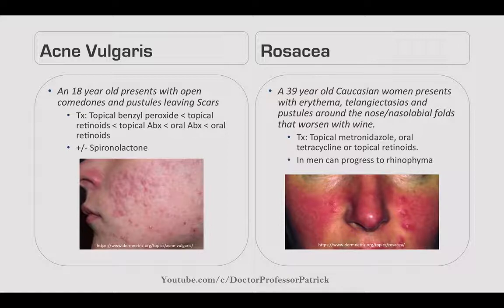Rosacea: a 39-year-old Caucasian woman presents with erythema, telangiectasias, and pustules around the nose and nasolabial folds, worsened by wine intake. Treat with topical metronidazole, oral tetracycline, and topical retinoids. In men, this can progress to rhinophyma, an enlarged nose.